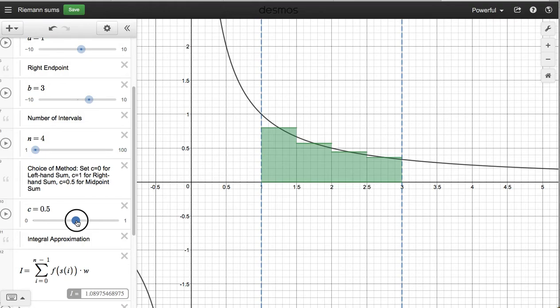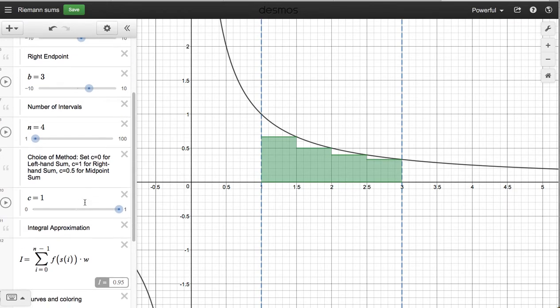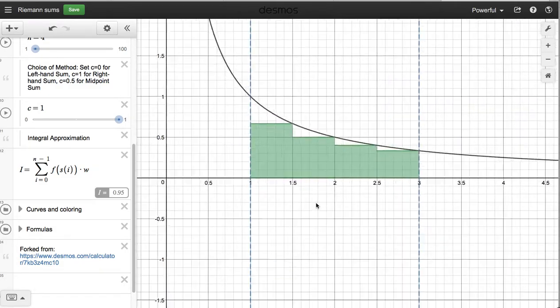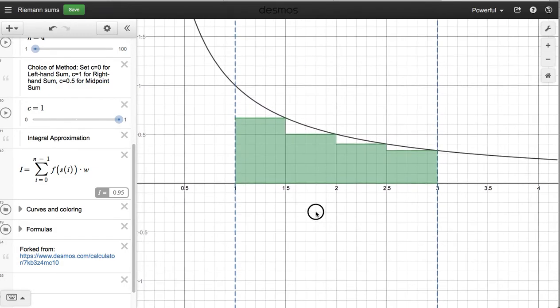Well, for number 15, I'm asked to use right-hand endpoint. So I'm going to slide it over here to C equals 1. And if you scroll down a little further, you can see right here the value of my Riemann sum is 0.95. And that's exactly the right value for this particular problem.